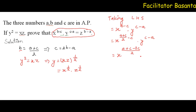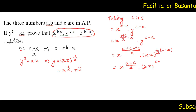Instead of Y, we can write XZ to the power 1 upon 2, and the power of Y is C minus A. So this becomes X to the power A minus C divided by 2, dot XZ to the power C minus A divided by 2.